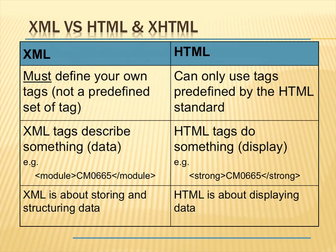In HTML you can only use the tags defined by the HTML standard, like H1, P, BR, or OL. Whereas in XML there are no predefined tags — you must define your own set of tags. HTML tags do something; they display. Increasingly with XHTML there's a move to make those tags semantically rich rather than to do with display, and that's less true with HTML5. But XML tags only describe what something is. XML is about storing data, whereas HTML is more about displaying data. XHTML can be about displaying data but is also more about storing data and having semantic meaning.